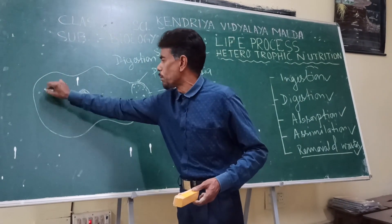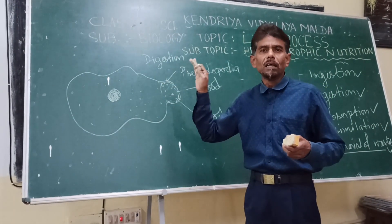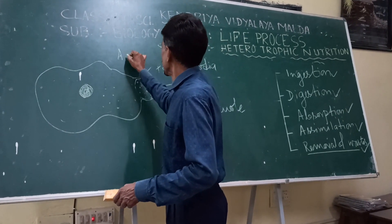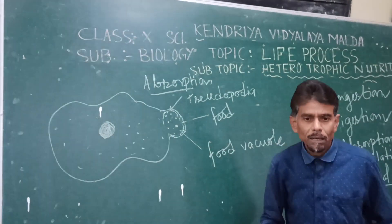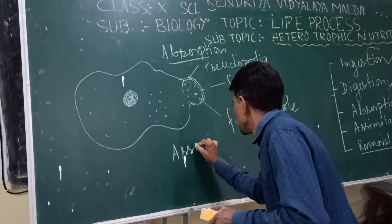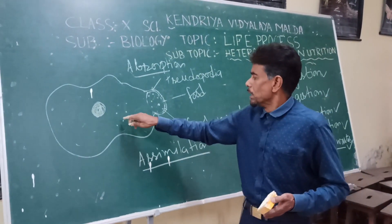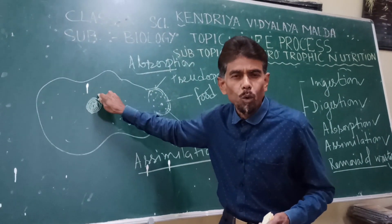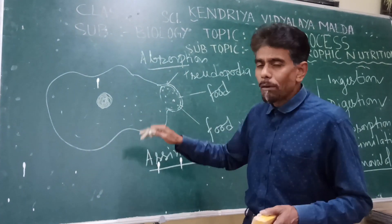Once digestion is over, the digested food particles come to the center of the cytoplasm, where they are absorbed by the cell of Amoeba — this is the process of absorption. The next step is assimilation, wherein the most simplified food that has been absorbed is now utilized for the production of energy or for other requirements of the body.